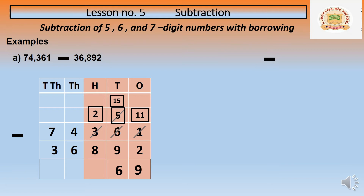Now let us move to the hundreds place. The 3 has become 2. In 200 we cannot minus 800, so we go to the thousands place. We have 4 thousand — from 4 thousand we take 1 thousand, making it 3 thousand. That 1 thousand added to 200 becomes 1200. Removing zeros, we get 12 minus 8, which equals 4. Answer so far: 4 6 9.